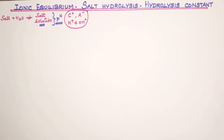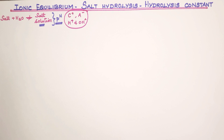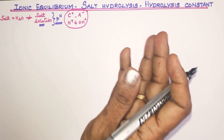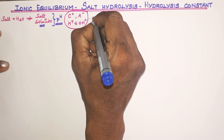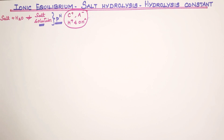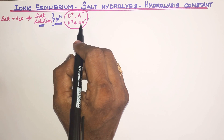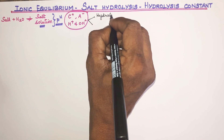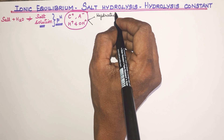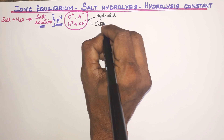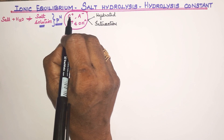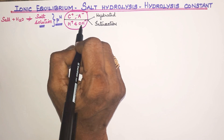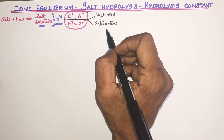When we dissolve salt in water, the ions can either be hydrated or interact with water. The cation and anion in the salt solution interact with water molecules. If hydrogen or hydroxyl ions are produced through interaction, the pH changes. If the ions are simply hydrated with no reaction, there is no change.